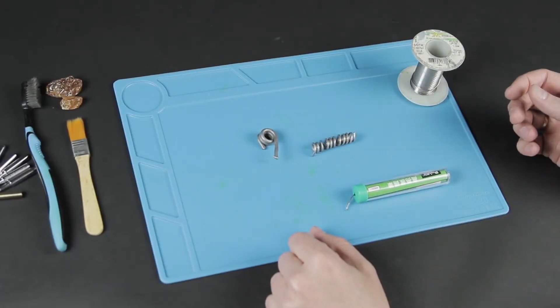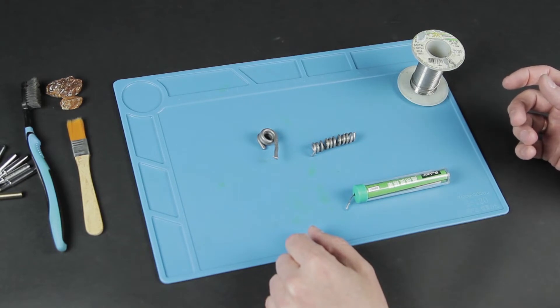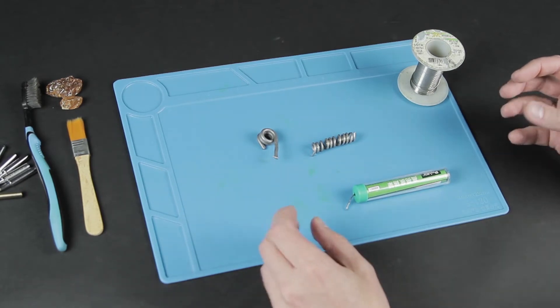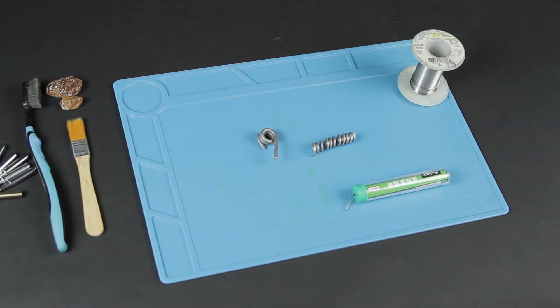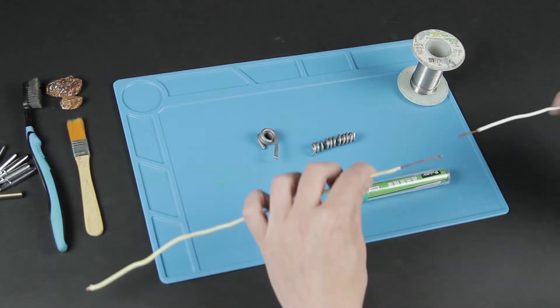Solder. The molten solder wraps around the surfaces to be soldered, and after it cools down, a strong and reliable connection is formed. Solder is usually tin, or an alloy of lead and tin in various proportions.